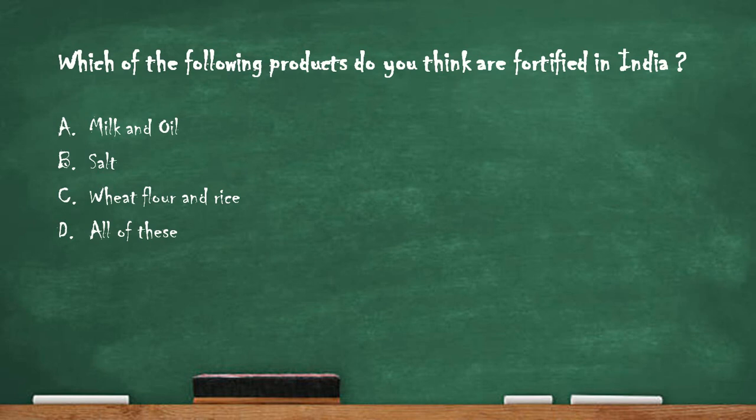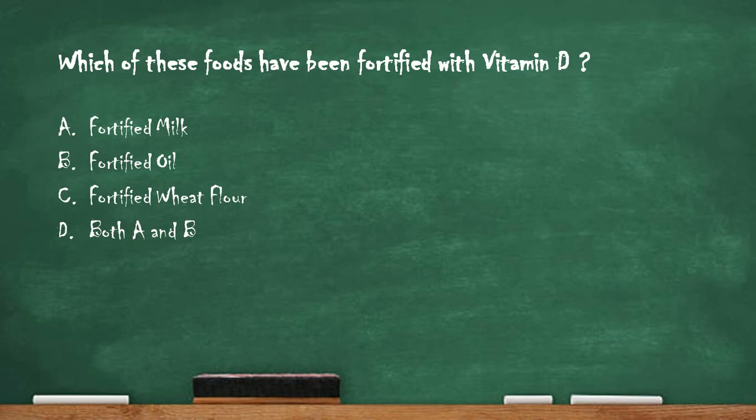Next question: which of the following products are fortified in India? Option A: milk and oil. Option B: salt. Option C: wheat flour and rice. Option D: all of these. The right answer is option D — all of these. All products such as milk, oil, salt, wheat flour, and rice are fortified in India.